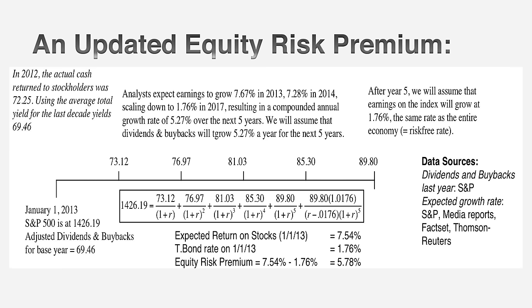I'm now set to compute an equivalent to yield to maturity. I have the price for stocks — 1,426.19 — and the expected cash flows. I solve for the discount rate that makes the present value of my cash flows equal to the level of the index today. It's a little messy, but I can get there, and what I get is an expected return on stocks. At the start of 2013, that number was 7.54%. The T-bond rate at that time was 1.76%. The difference of 5.78% is my estimate of a forward-looking equity risk premium at the start of 2013. You can recompute this number the next day and get a different number — it's forward-looking and dynamic.